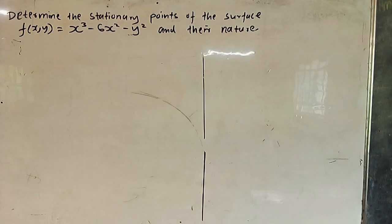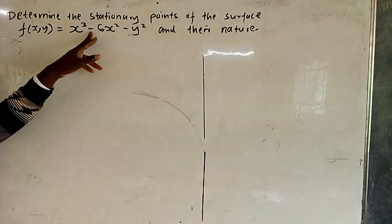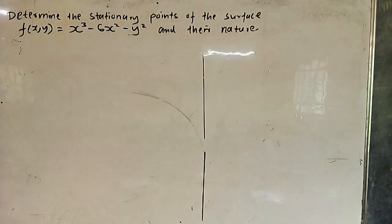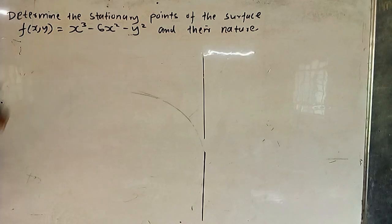In this example, we will determine the stationary points of the surface f(xy) = x³ - 6x² - y², and their nature. The first thing we want to do is determine those stationary points, and then we describe their nature.